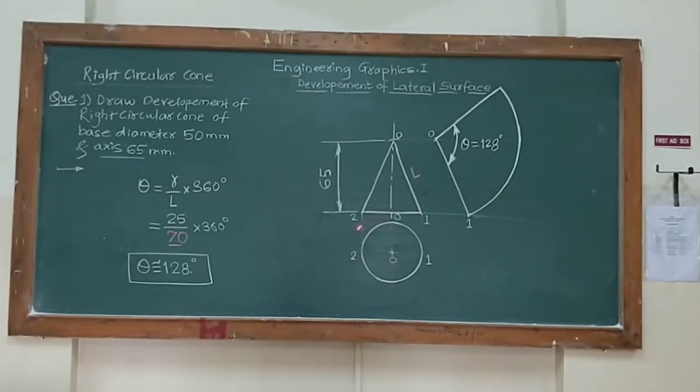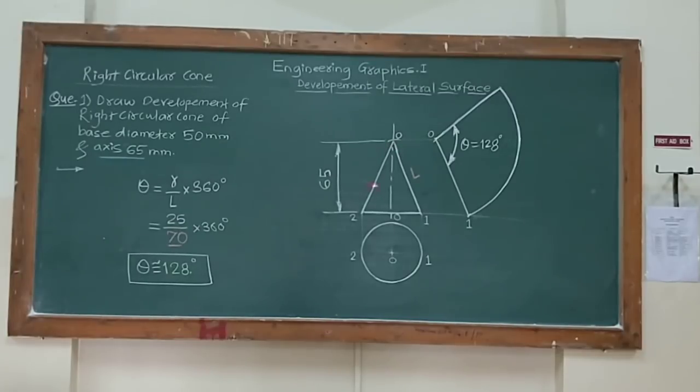So how to draw a front view. First you can draw a circle. If generator length is 80 mm, just project these two ends, 1 and 2, on this XY line. And from this point 1 or 2, you can mark 80 mm on the axis length. So accordingly you would get the front view. And then with the same process to calculate theta, you can draw the development of cone.